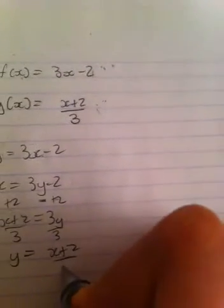Divided by 3, divided by 3, so that we get y equals x plus 2 over 3. Now if you notice, this is the same as g of x.